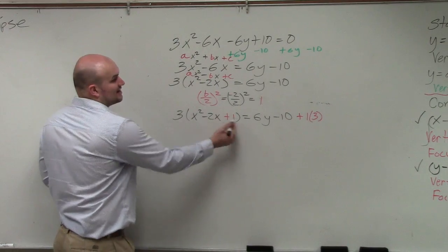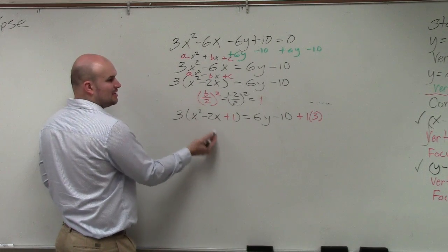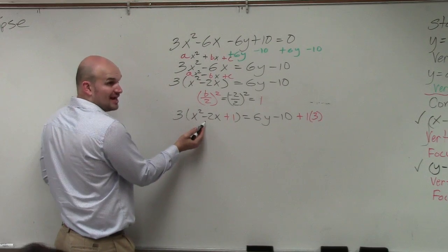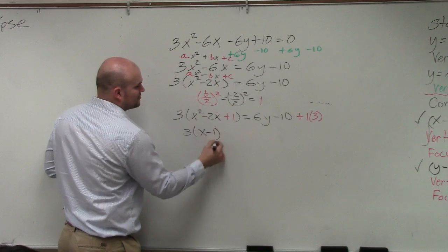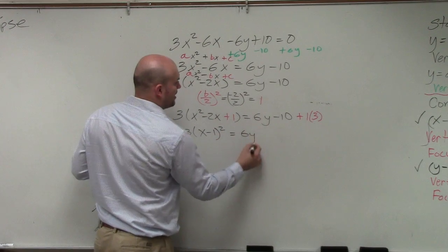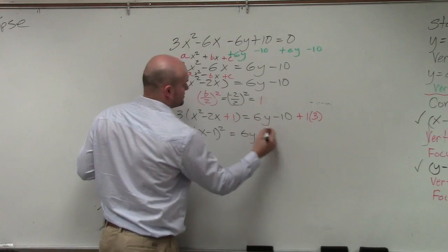So then I factor this. What two numbers multiply to give you 1 but then add to give you -2? -1 and -1, right? So therefore this can be factored into (x - 1)² = 6y - 7.